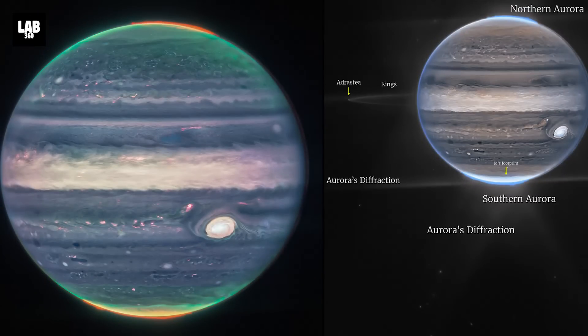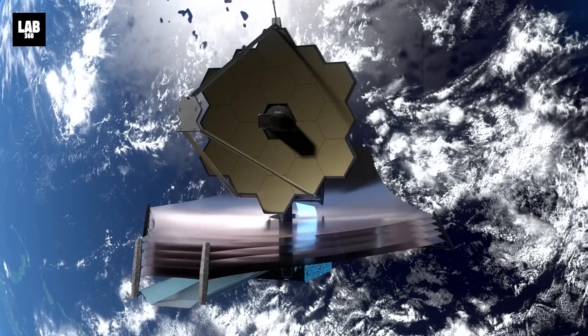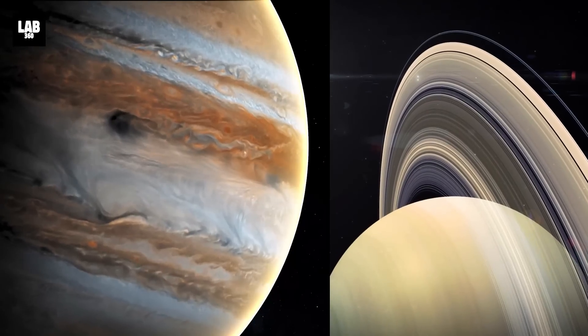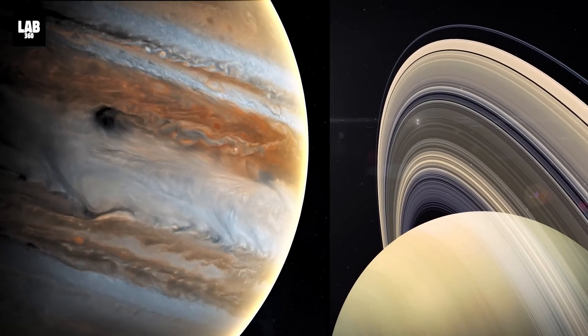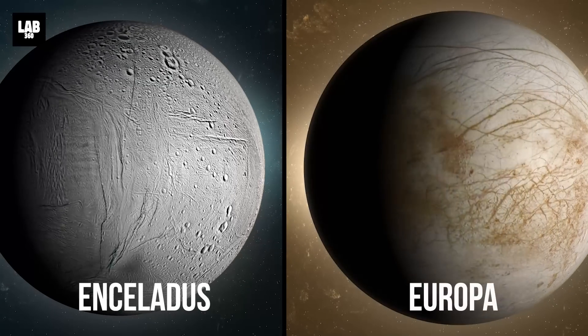The James Webb Space Telescope recently captured some stunning images of Jupiter. And very soon it will turn its powerful eye on two of the solar system's top candidates for hosting alien life: the icy moons Enceladus and Europa.